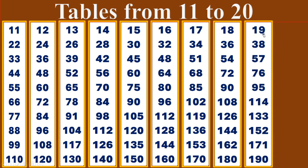Nineteen times table. Nineteen ones are nineteen. Nineteen twos are thirty-eight. Nineteen threes are fifty-seven. Nineteen fours are seventy-six. Nineteen fives are ninety-five. Nineteen sixes are one hundred and fourteen. Nineteen sevens are one hundred and thirty-three. Nineteen eights are one hundred and fifty-two. Nineteen nines are one hundred and seventy-one. Nineteen tens are one hundred and ninety.